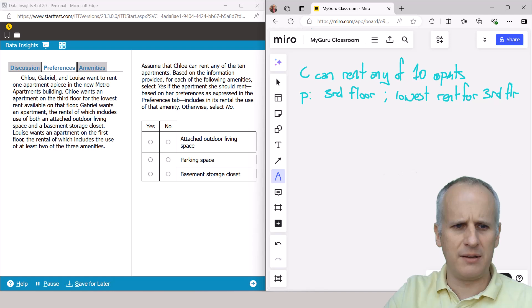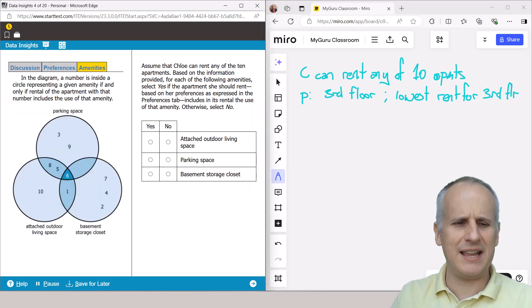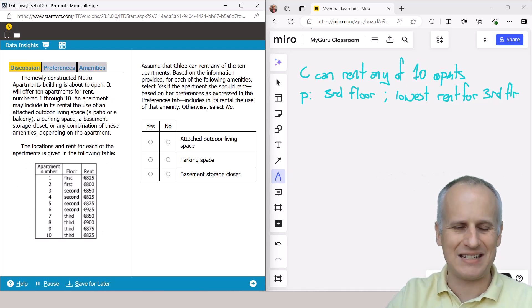So now we've got to go to the amenities. And we see in the diagram, a number is inside a circle representing a given amenity if and only if rental of the apartment with that number includes the use of that amenity. And I go, okay, well, this is way too much extra stuff. I got to go back to the discussion, because I don't see anything about floors. And that's really all that Chloe's concerned with. So it has to be on the discussion tab at this point.